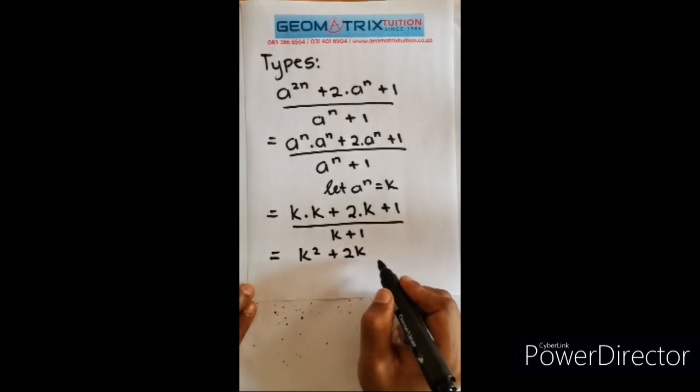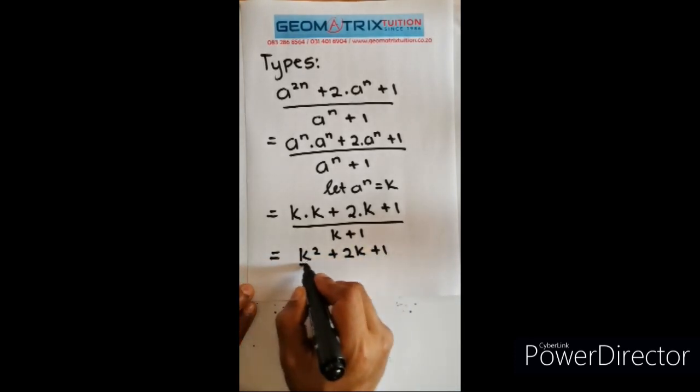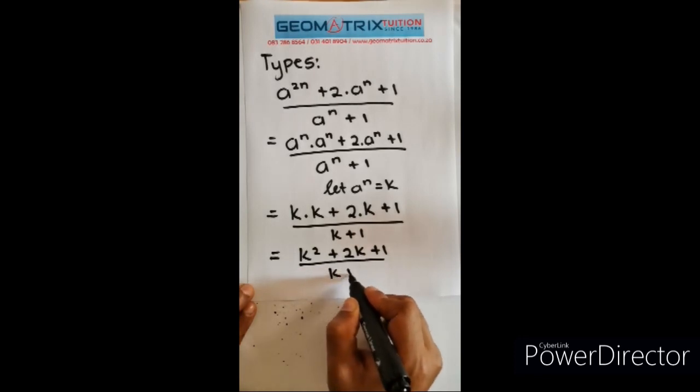Now you can see this taking some shape now because k times k is k squared plus two times k is 2k plus one all over k plus one.